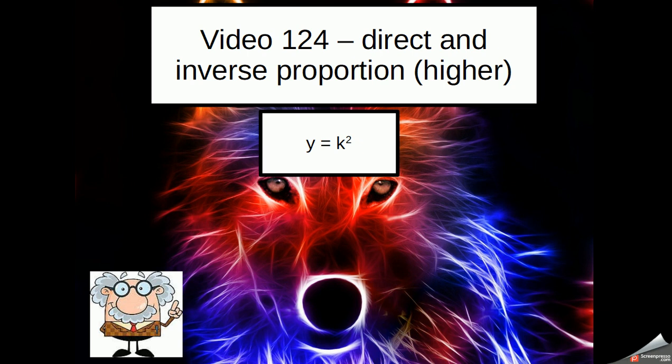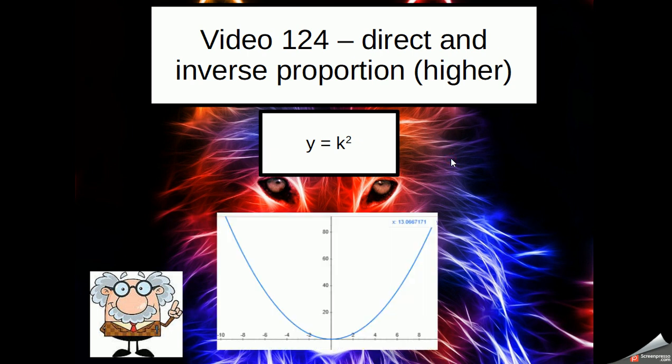So I've actually changed the x to a k here. So if it was y equals k squared or y equals x squared, it's directly proportional because the x squared is on the top. And it would give us a curve like this, a u-shaped curve. So if you've got a u-shaped curve, then it's directly proportional and y equals k squared or x squared.